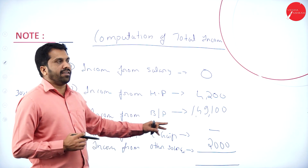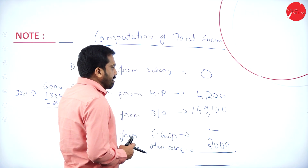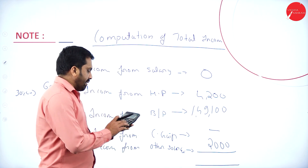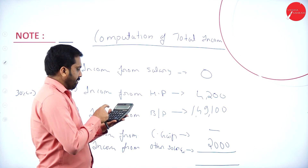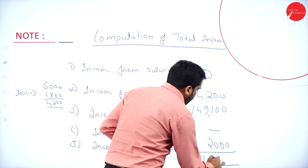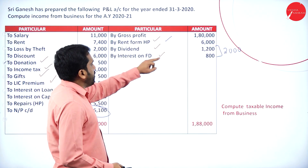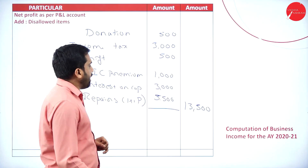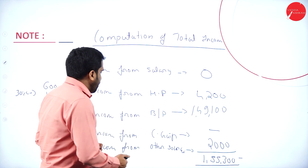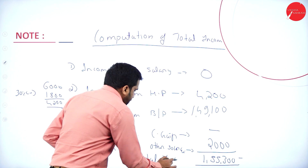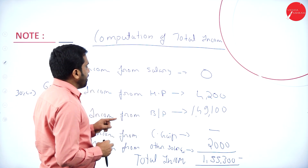Any dividend received from an Indian company is exempted. Now, adding everything: 4,200 (house property) plus 1,49,100 (business) plus 2,000 (other sources) gives total income of 1,55,300. Remember, this is total income, not taxable income. While calculating taxable income, the dividend portion of 1,200 has to be reduced.